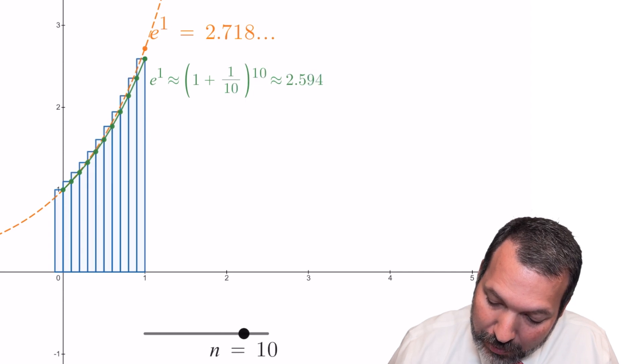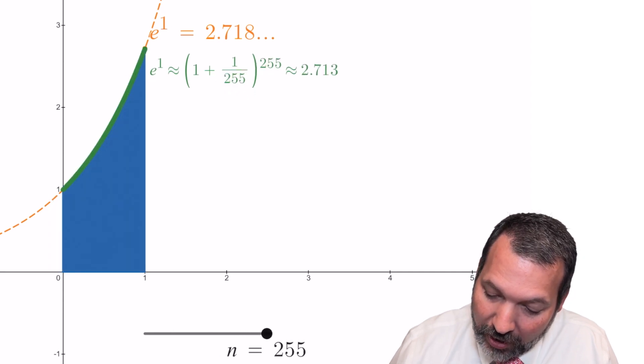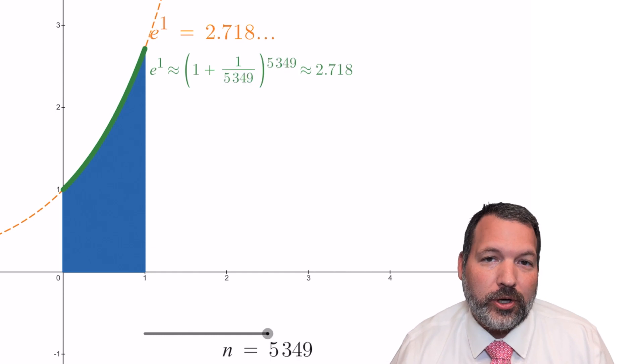All those little rectangles represent the interest we're getting in that infinitely tiny slice of time between our check-ins. And as we make those slices smaller and smaller to the point where they are infinitely small, we approach the exponential curve.